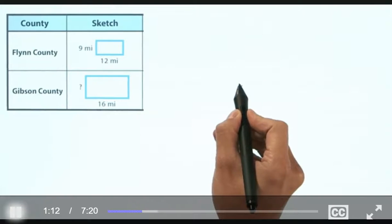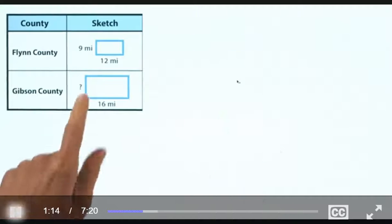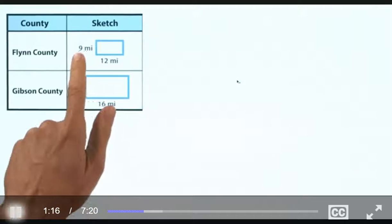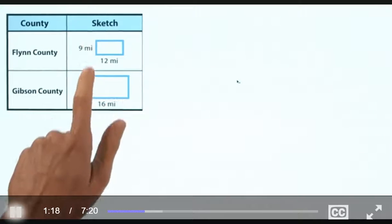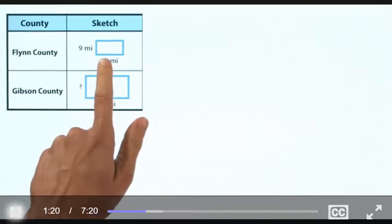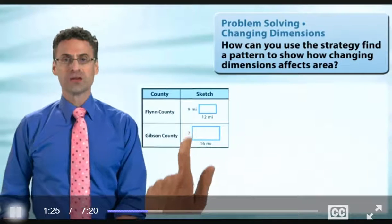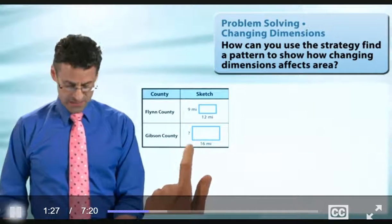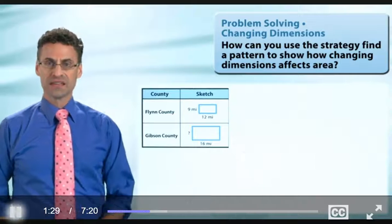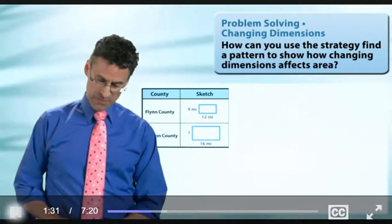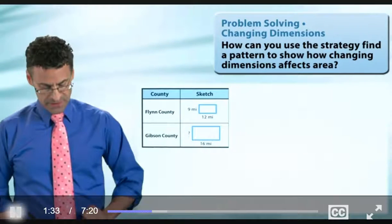So, here's a little sketch of how they look. You see here, Flynn County, we see, is 9 miles by 12 miles. And Gibson County is, well, we don't know, in fact, what the width of Gibson County is, but we know that the length of Gibson County is 16 miles. So, this is kind of roughly how they look.